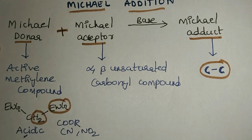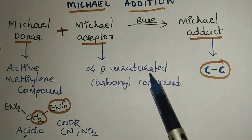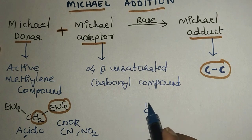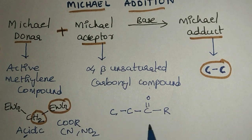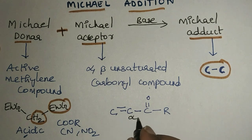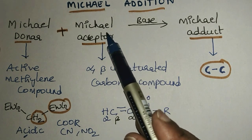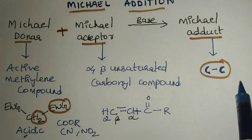A Michael donor is a compound which can provide acidic hydrogens. A Michael acceptor is an alpha-beta unsaturated carbonyl compound such as an aldehyde, ketone, ester, or amide. The alpha carbon and beta carbon refer to positions adjacent to the carbonyl, and the compound must have an alpha-beta unsaturated bond. These compounds are called Michael acceptors.